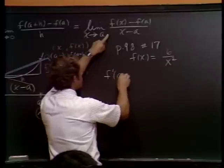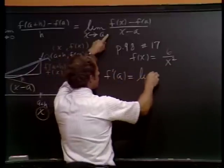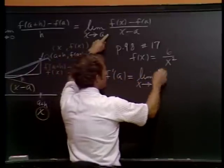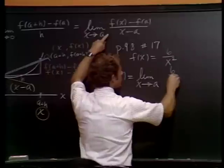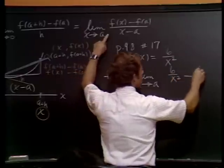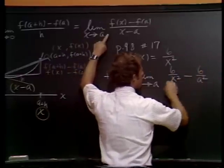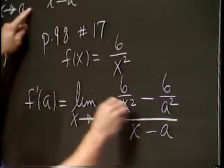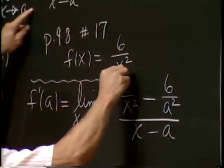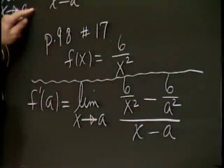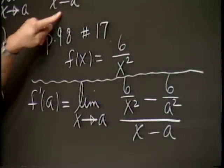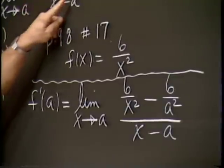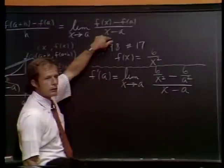That should be the limit as x goes to a. f of x, 6 over x squared, minus f of a, all over x minus a. OK. We're using this formulation up here. It's f at x, minus f of a, over x minus a.